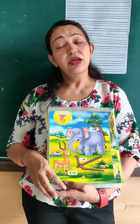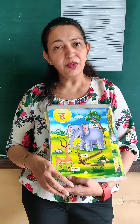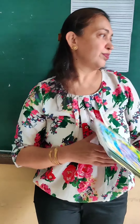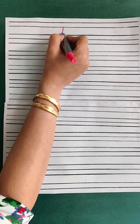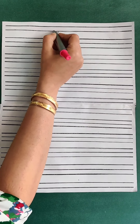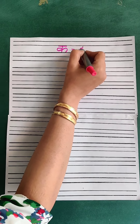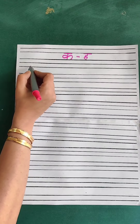Humne Ka se Ha tak nursery mein bhi seekha tha. Aaj hum usko apni pink notebook mein likhenge. You should cover your Hindi notebook with a pink sheet. Okay? So let's take out the notebook. This is your Hindi notebook and you should write very neatly. Always speak the letter aloud and after that write it. First write the heading on the top line, then today's work is Ka se Ha. Start from the first line.